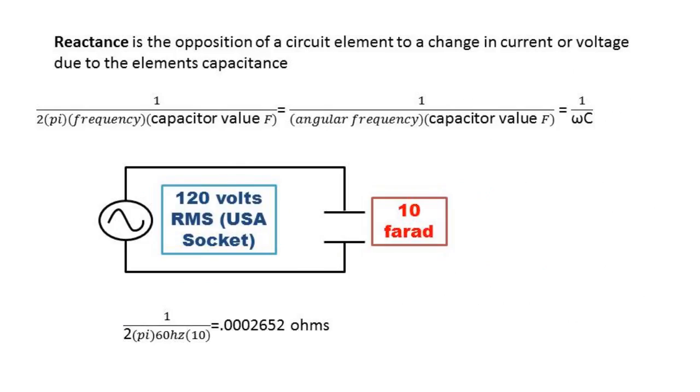Capacitors have some resistance when they're in a circuit. This resistance is called reactance. Reactance is the opposition of a circuit element to a change in current or voltage due to the element's capacitance.